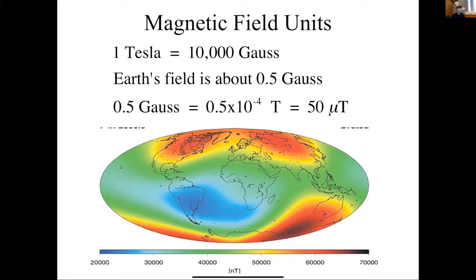The Earth's field is about half a Gauss — roughly 0.5 × 10⁻⁴ Tesla or 50 microtesla. So one Tesla is about 20,000 times the Earth's magnetic field, and a three-Tesla magnet is 60,000 times the Earth's field. These are really powerful magnets. As part of the first MRI homework, you'll be asked to use the magnetometer in your iPhone or Android to measure magnetic fields around campus, including near the MRI systems.